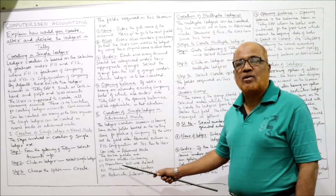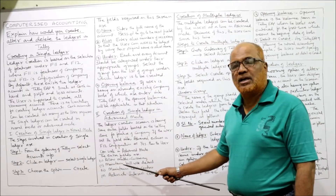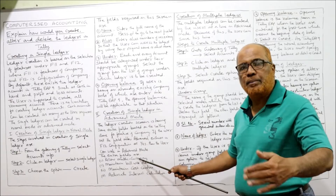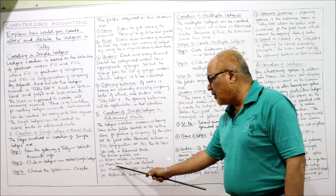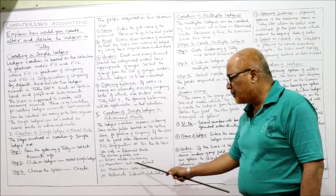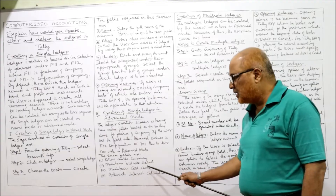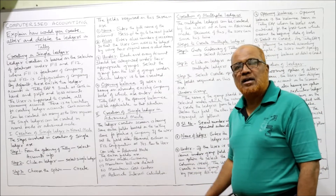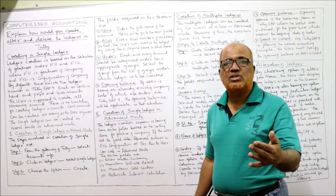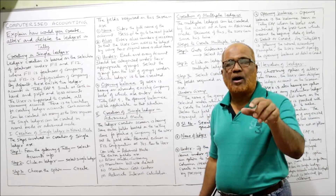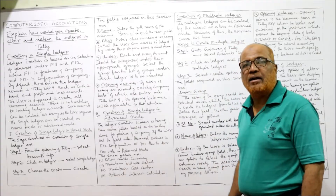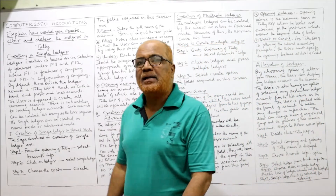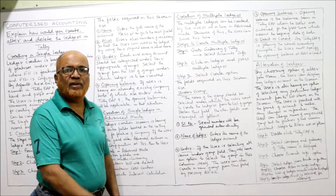If the user sets the field 'Use advanced entries' in F12 configuration to Yes, then the user can work in advanced mode. The extra fields available in advanced mode are: allow multi-currency, maintain bill-wise detail, maintain cost center, and activate interest calculation. These are the extra fields available when an account is opened in advanced mode.